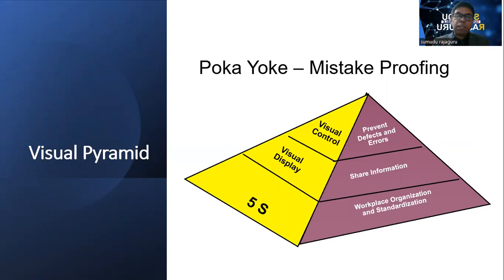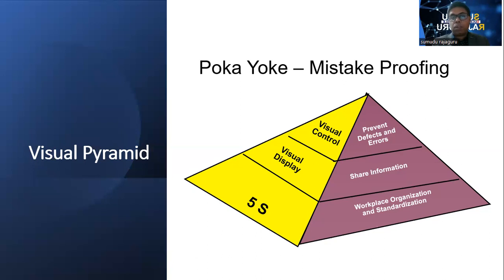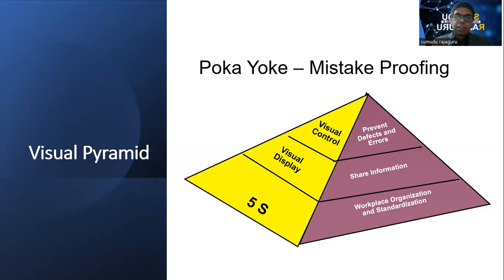When we talk about Seiri, that means segregate. Whatever is required and whatever is unrequired, we have to segregate in a proper way. Seiso means frequent cleaning. When we implement the 5S concept, we can achieve workplace organizing and standardization. When the workplace is organized, our searching time can be reduced, and when searching time reduces, it will directly lead to productivity improvement. So through 5S, we can improve productivity.